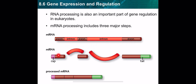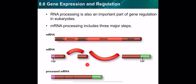The cell processes the mRNA to contain exons only and gets rid of the introns. Second, the cell adds caps and tails: caps are for protection of the coded parts, and tails are also for protection and to help the mRNA move out of the nucleus to the cytoplasm to start translation.